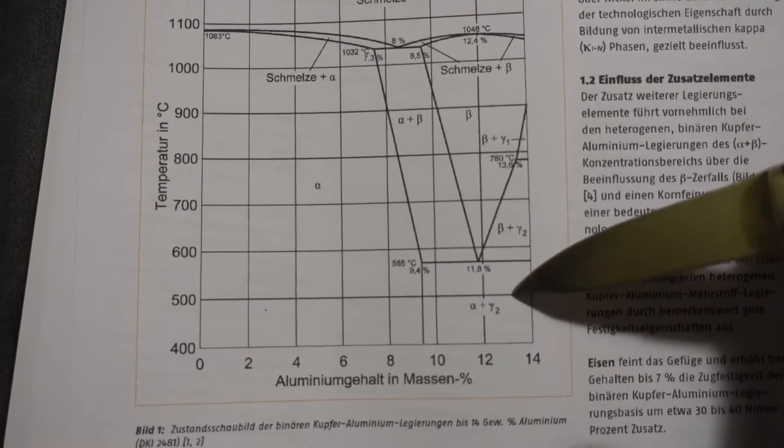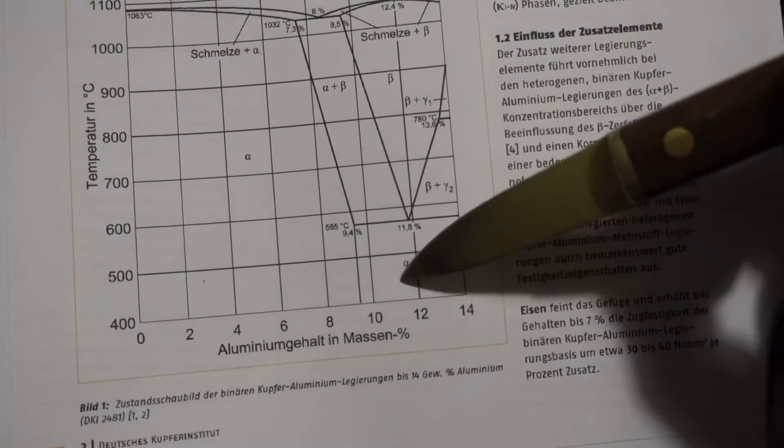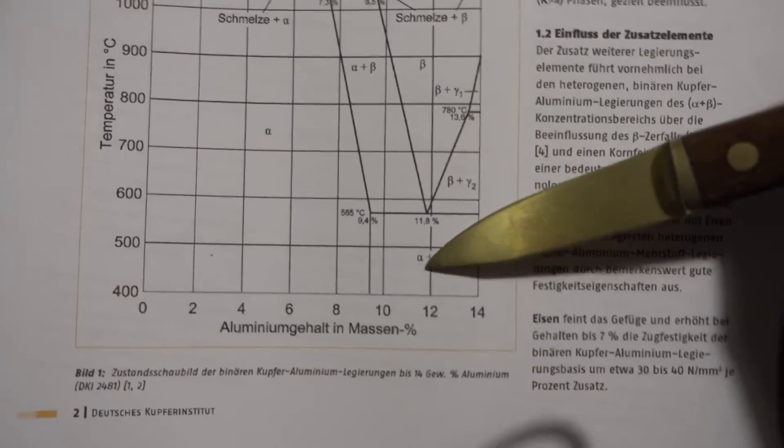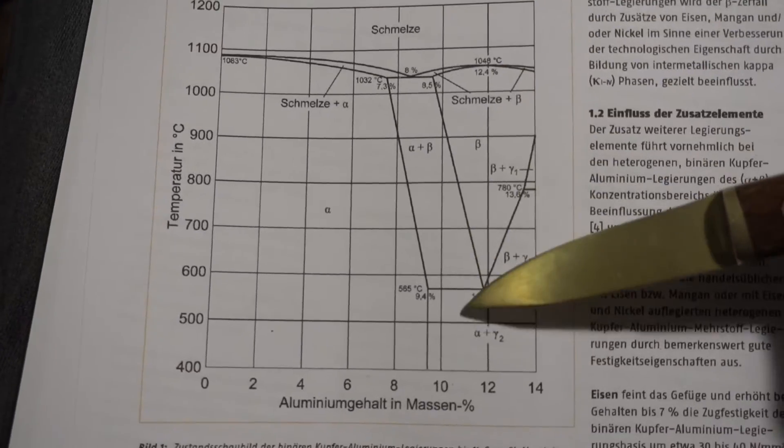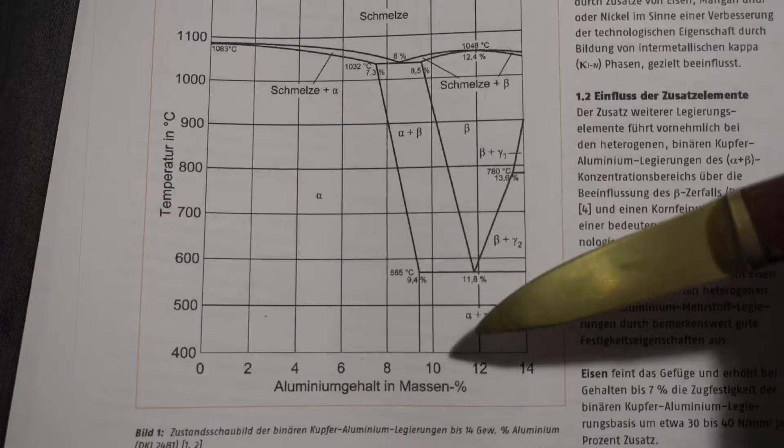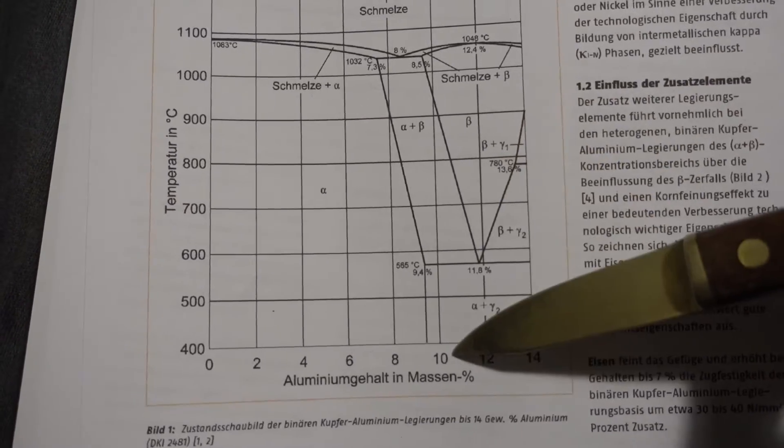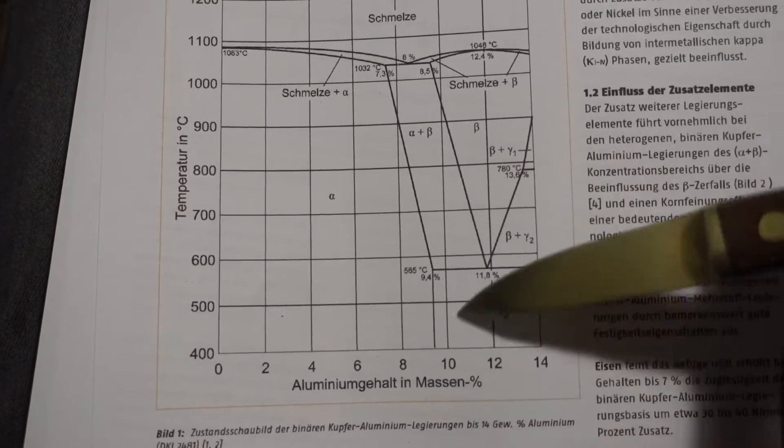You have the percentage aluminum and the temperature, and you see that we have in this region a mixture of an alpha and gamma phase, but that's only if you cool it down infinitely slow. So in reality you have more like a mixture of beta, alpha-beta, and a little bit of gamma when you cool it at normal speeds.